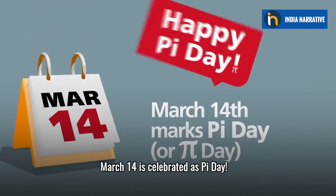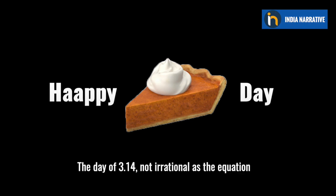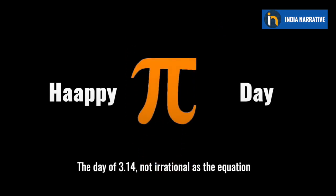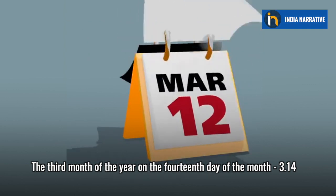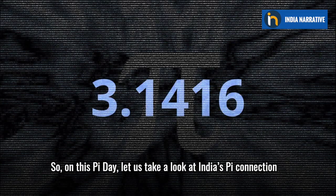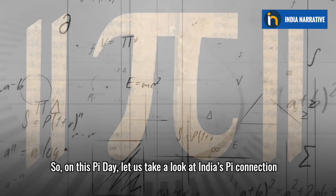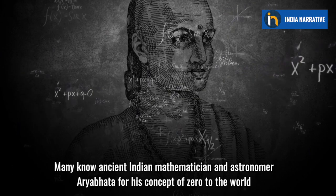March 14th is celebrated as Pi Day, not the lemon pie or the pumpkin pie, but the day of 3.14. Not irrational as the equation: the third month of the year on the 14th day of the month, 3.14. On this Pi Day, let us take a look at India's Pi connection.